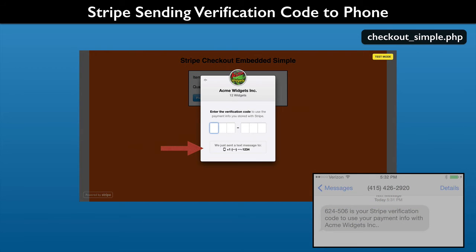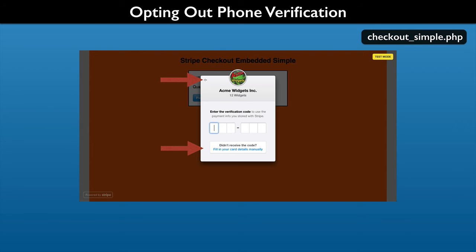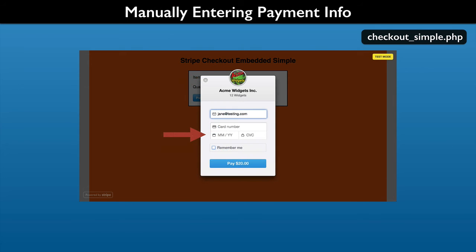Once sent, the screen updates with part of the receiving phone number masked, then that is removed with a simple sent message. Keep in mind SMS messaging is not perfect. If it fails, there is an opt-out for the user. After about 8 seconds, the user is offered to enter their payment information manually. Selecting that or the back arrow in the top left corner returns to the checkout screen. The user is back to re-entering all the payment information. The Remember Me checkbox is still available, so if the user wants to store the payment information again, they can — but they still need to enter all the payment information.